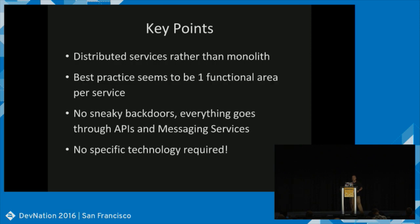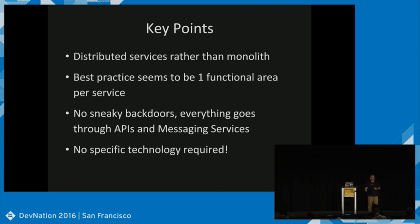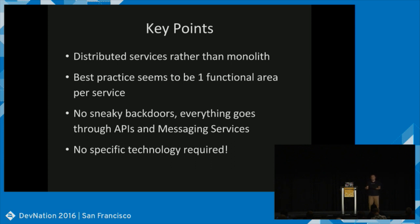The key parts for today: distributed services rather than a monolith, and no sneaky backdoors. Everything must go through either APIs or a messaging service — there's no in-memory call behind the scenes. Everybody's a consumer of everybody else's API. There's no specific technology required, which is partly why large companies adopt microservices: they're tired of teams arguing about what technology to use. In a microservices model, using Node versus Java becomes more acceptable.